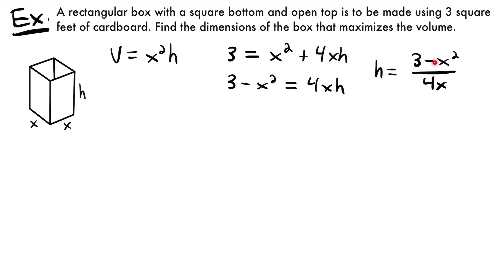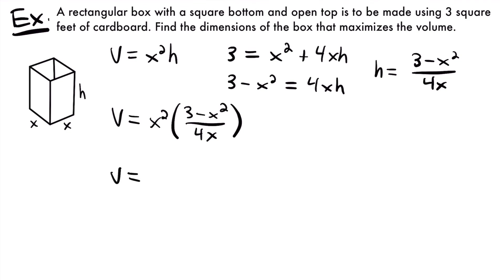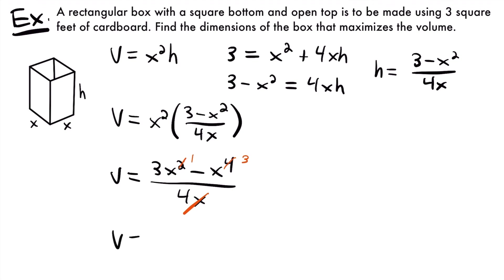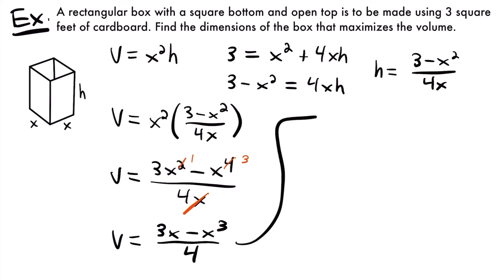Substituting h into the volume equation: V equals x squared times (3 minus x squared) divided by 4x. Distributing x squared: V equals (3x squared minus x to the fourth) divided by 4x. Factoring out x from the numerator: V equals (3x minus x cubed) divided by 4. Splitting the fraction: V equals three-fourths x minus one-fourth x cubed.